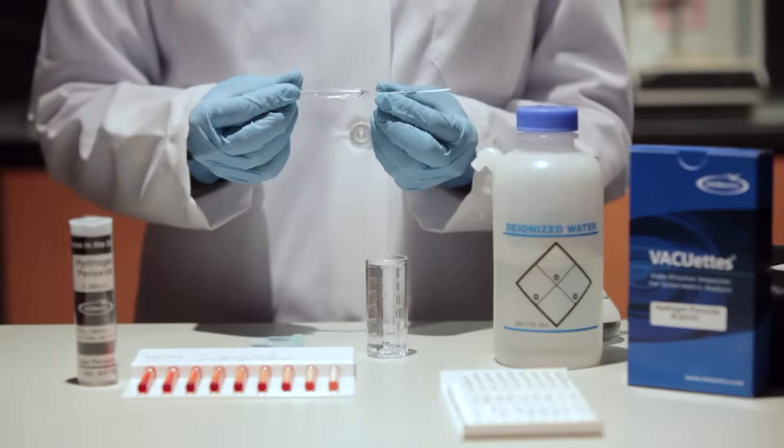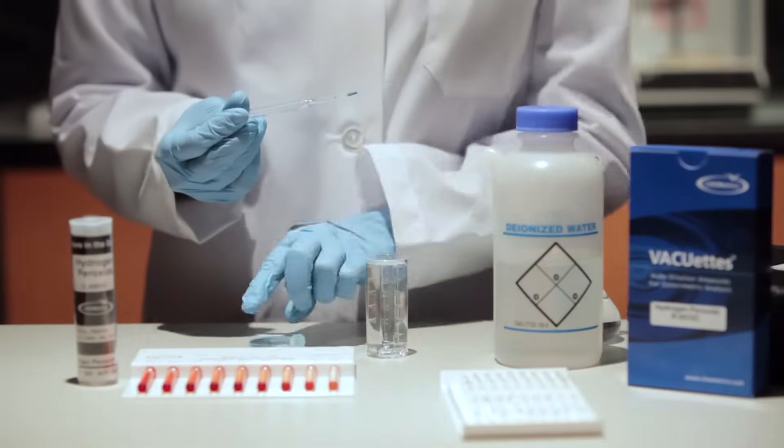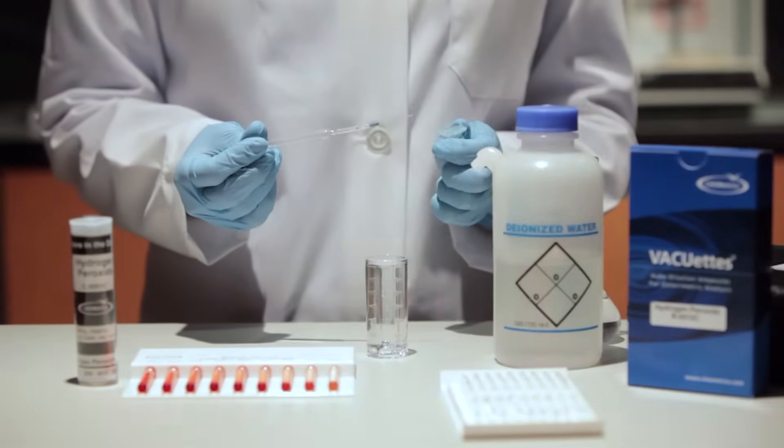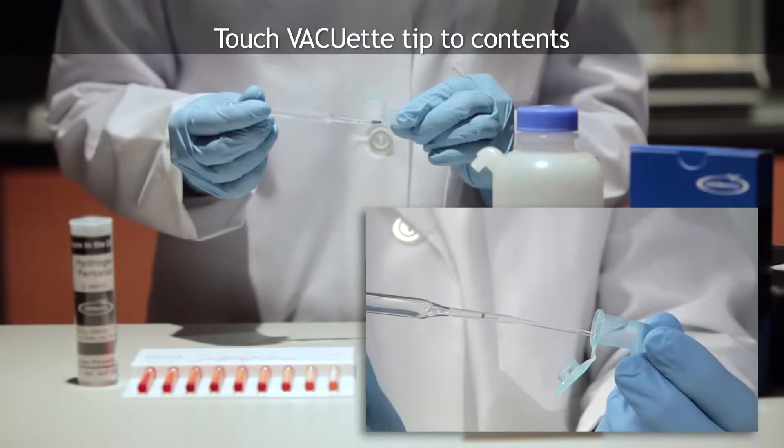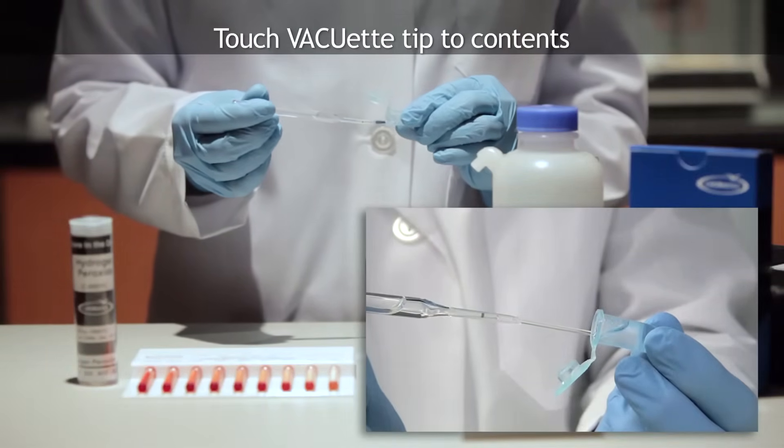Making sure that the VACUETS tip is firmly attached to the ampule tip, hold the ampule in a horizontal position and touch the tip to the contents of the microtest tube. The capillary tip will fill completely with sample.